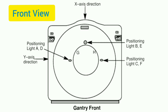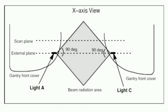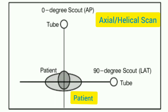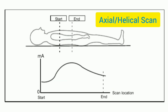Now let us see the front view diagram. This is the X-axis view of the scan plane. This is the cradle. We can see the foot switch, home position, speaker, and the latch button. This is the front view diagrammatic representation for helical scan or axial scan.